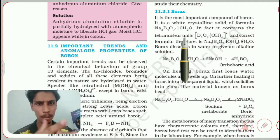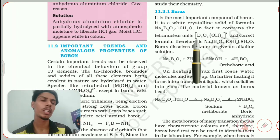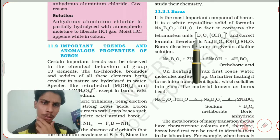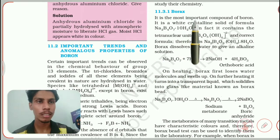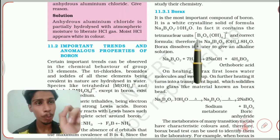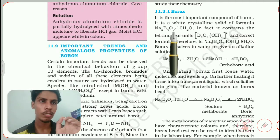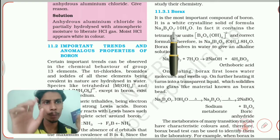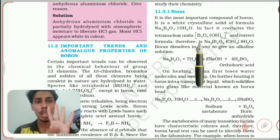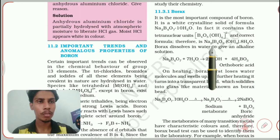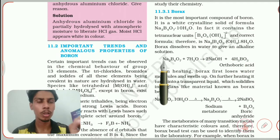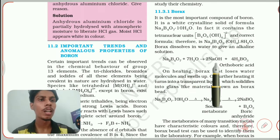In fact, borax contains tetranuclear units — 'tetranuclear' means there are 4 boron atoms at the center of the molecule. If you count the boron atoms in the formula, you will find 4. That is why it is called a tetranuclear unit. The correct formula is therefore Na₂[B₄O₅(OH)₄]·8H₂O. Borax dissolves in water to give an alkaline solution: Na₂B₄O₇ + 7H₂O → 2NaOH + 4H₃BO₃. H₃BO₃ is boric acid — if you know whether it is acidic or basic, comment in the comment section.